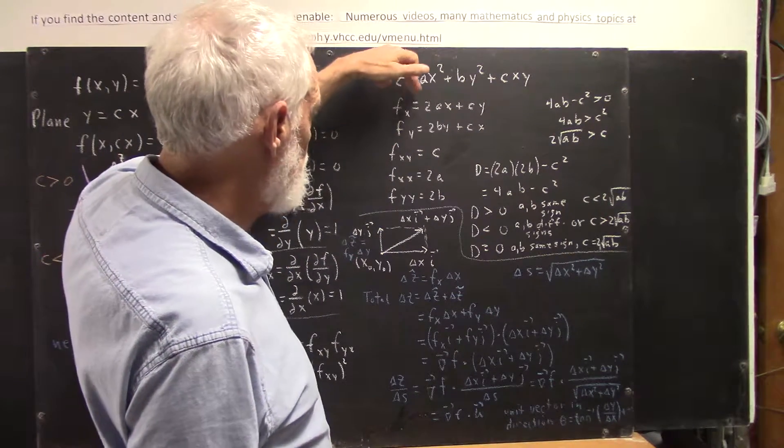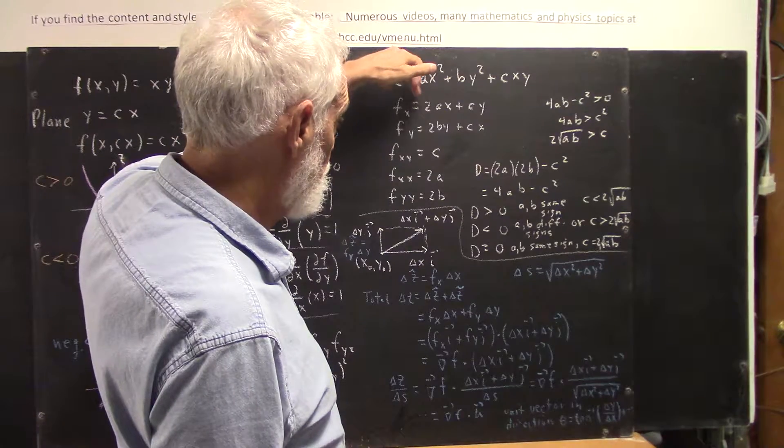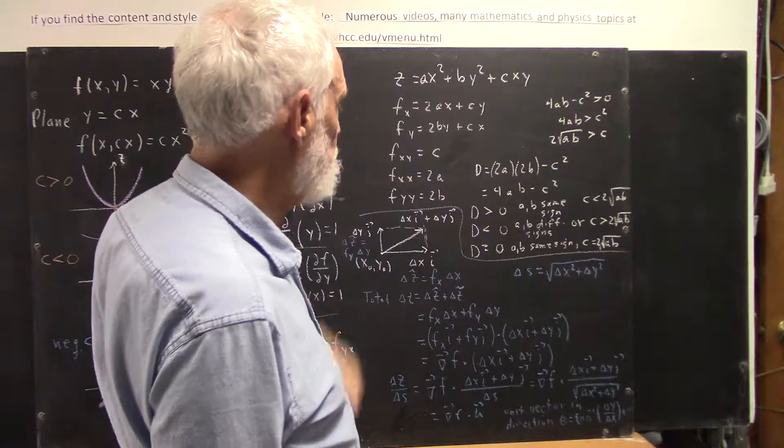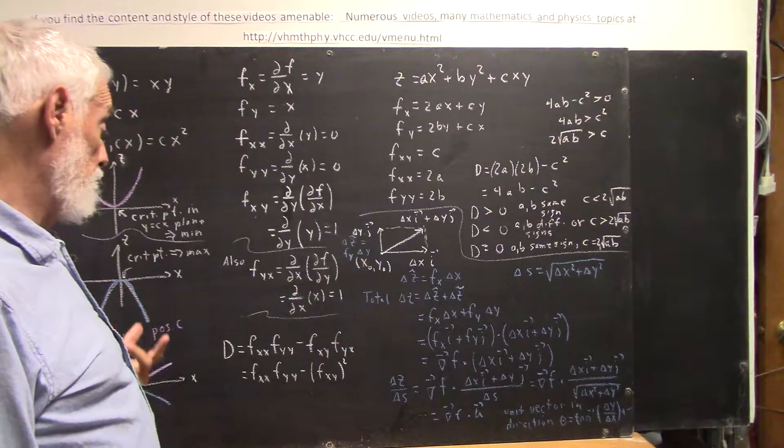Calculating fxx, we take a derivative with respect to x of this, clearly we get 2a, derivative with respect to y of this, clearly we get 2b. How does this test come out then?